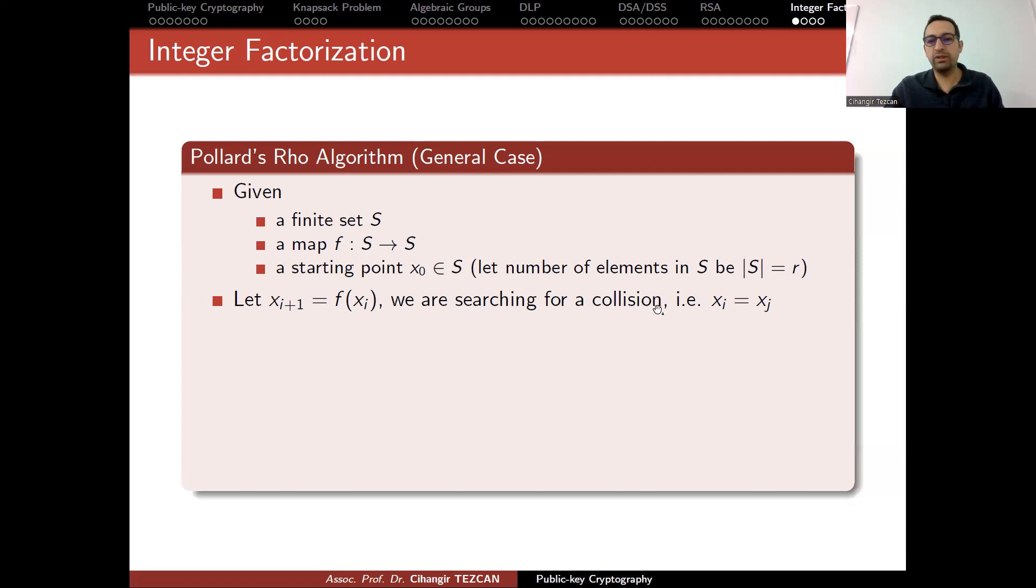You have a function f taking the i-th input and providing the i+1 value. We are searching for a collision, in other words, xi equals xj at some point. You can use it for hash collisions, but in general, you can also use it for integer factorization and so on. One way to find a collision is as follows.